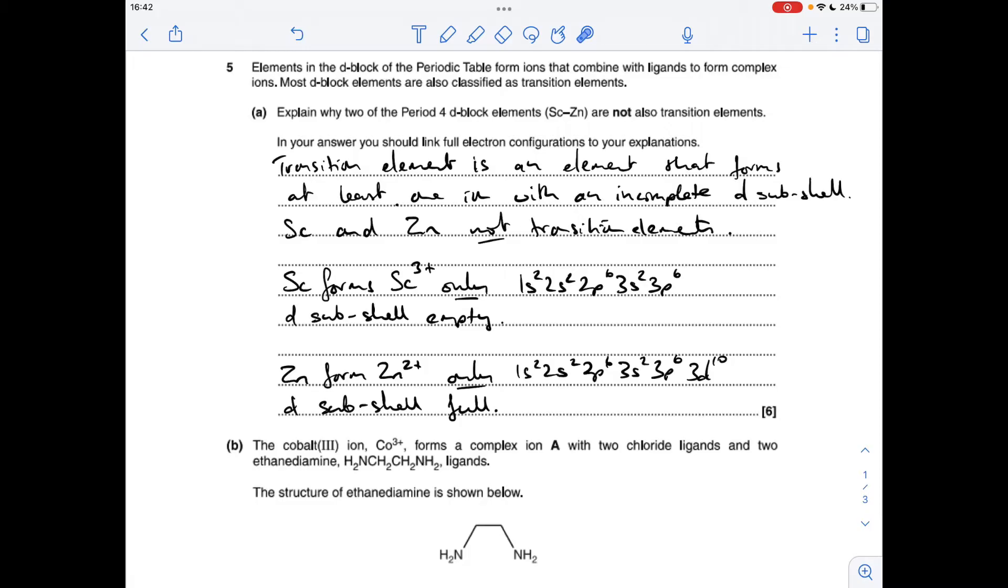Okay, so part A: we've got to explain why two of the period four D block elements are not transition elements. A transition element is an element that forms at least one ion with an incomplete D subshell.